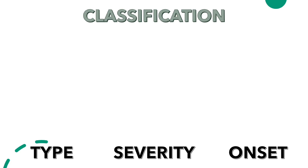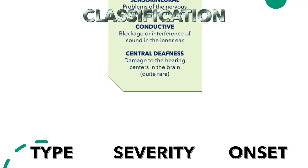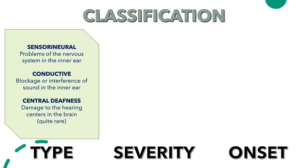When identifying a hearing impairment, we also need to classify the different areas of the impairment. When classifying a hearing impairment, we need to look at the type, severity, and onset. For the different types, there's sensorineural, which means problems of the nervous system in the inner ear. There's also conductive, meaning there's a blockage or interference of sound in the inner ear. Finally, there's central deafness, which is damage to the hearing centers in the brain, and this is actually quite rare.